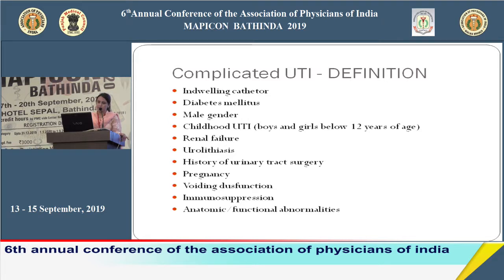Any type of congenital anomalies of the urinary tract — if UTI occurs in their presence, it is labeled a complicated UTI. We have to take care whether UTI is happening in the presence of these predisposing conditions, because then it is not a simple UTI but a complicated UTI, and treatment is altogether different.